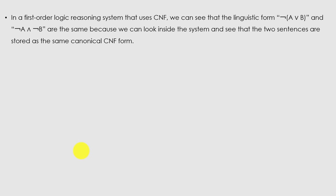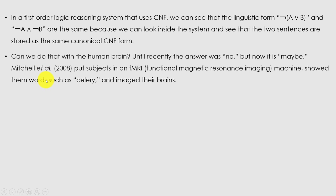In first-order logic reasoning systems that use CNF, we can see that the linguistic form 'negation of a disjunction of b' is the same as 'negation of a disjunction negation of b' because we can look inside the system and see that the two sentences are stored in the same canonical form. For example, a logic expression like ¬(A ∨ B) is the same as ¬A ∧ ¬B after opening the bracket.